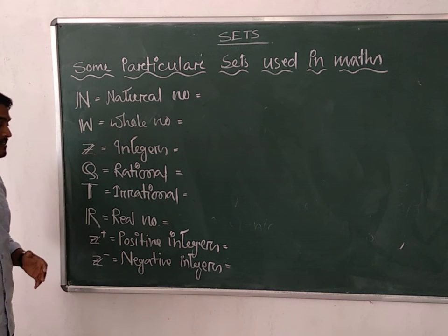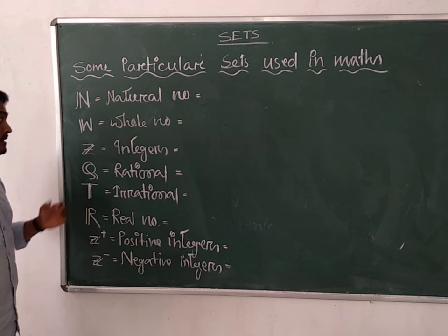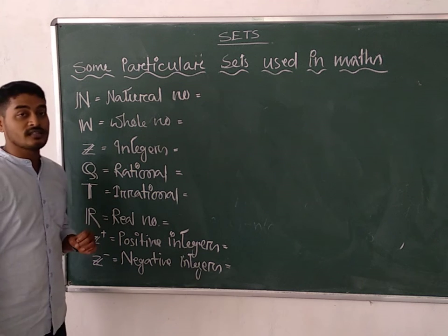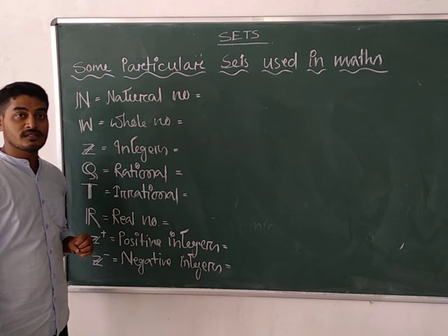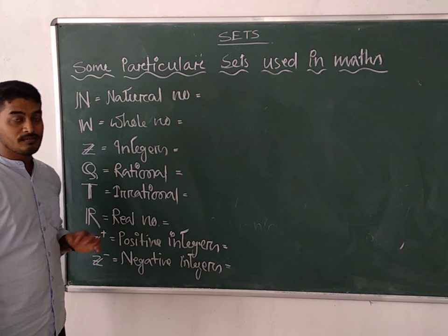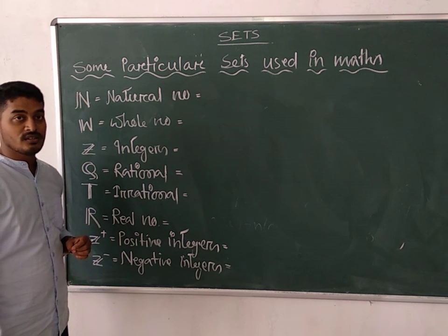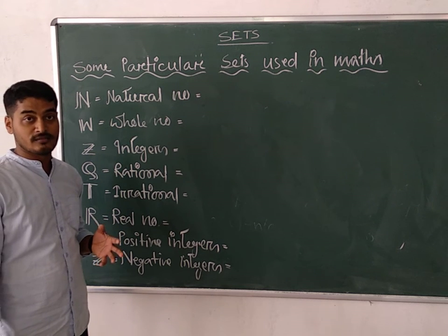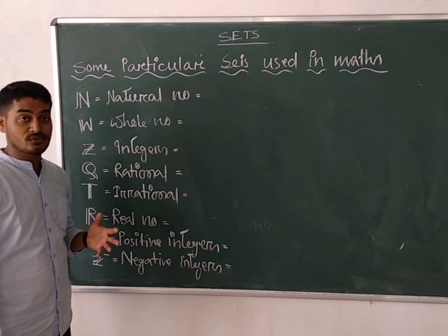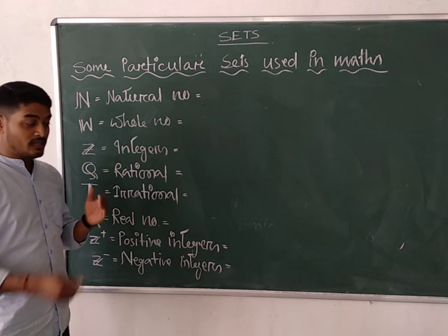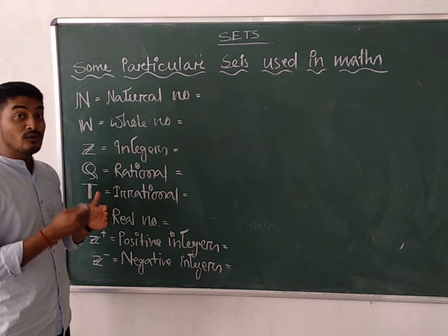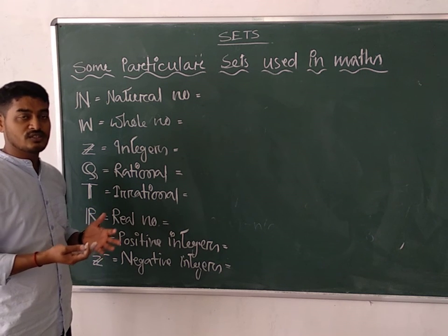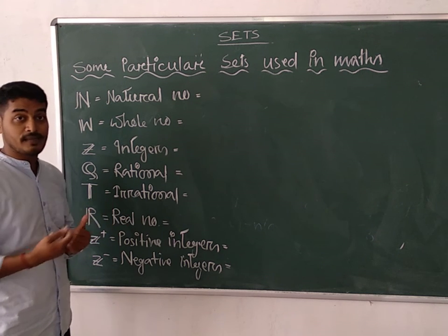These specific sets are used in our mathematics. So what about natural numbers? Natural numbers are nothing but the counting numbers. You cannot just say 'the numbers starting from 1 are known as natural numbers,' because if I start at 1, then 1.1, 1.2 — but they are not natural numbers. So your answer should be specific.